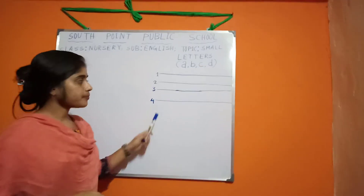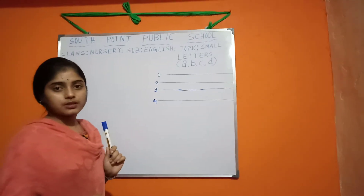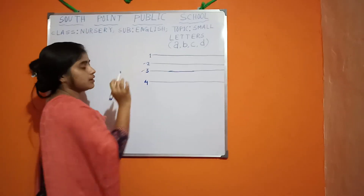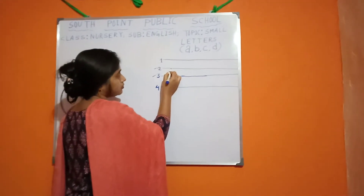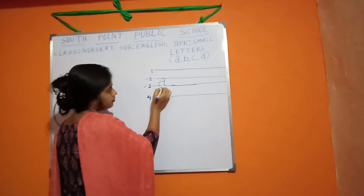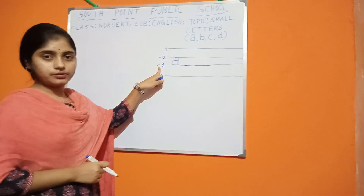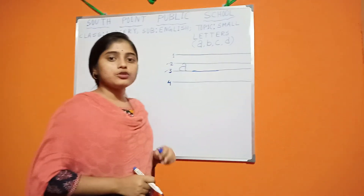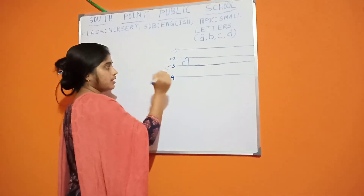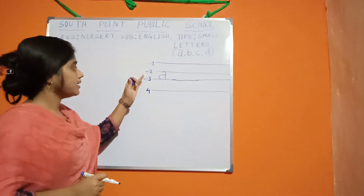There are 4 rules. To write A we need only 2 rules — the second rule and the third rule. In this rule we can write A. This is A. To write A we need the second rule and the third rule.